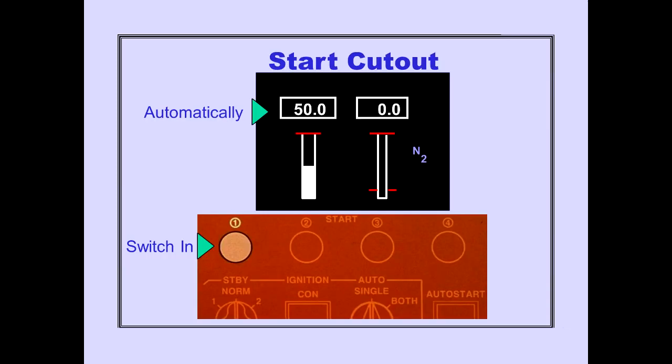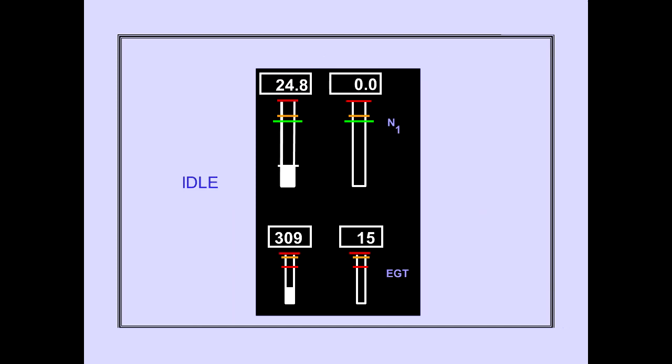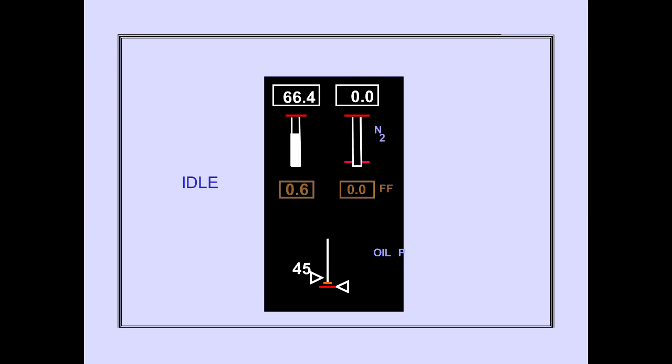Starter cutout occurs automatically at 50% N2 RPM. The engine start switch returns to the in position. The start valve closes and ignition terminates. N1 and EGT stabilize at idle. N2 RPM stabilizes at idle and oil pressure stabilizes in the normal range. The other engines are then started in the same manner.